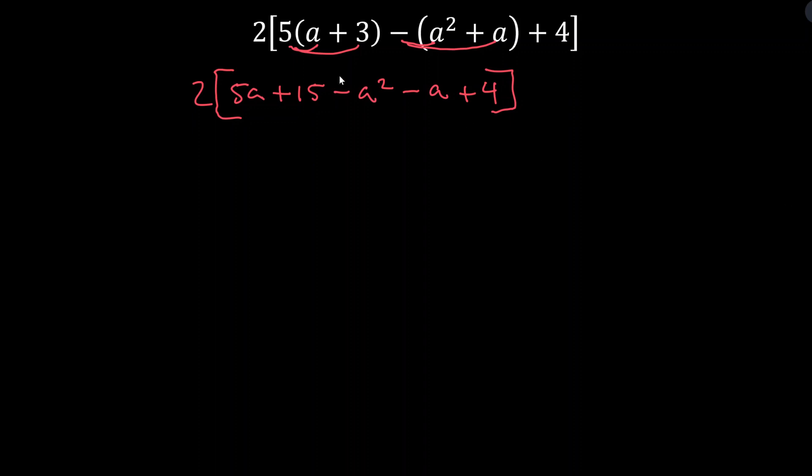So now we can actually combine like terms inside the brackets and then distribute the 2. And then we should be done. So let's see what like terms we have here. We have a minus a squared, that's by itself. So we're going to have 2 times negative a squared. What else will we have? 5a minus a, that's going to become plus 4a. Then we have 15 plus 4, that's going to become plus 19. And now we can just multiply everything by 2. So this is equal to negative 2a squared plus 8a plus 38. And if you did it the other way, you should get the exact same answer.